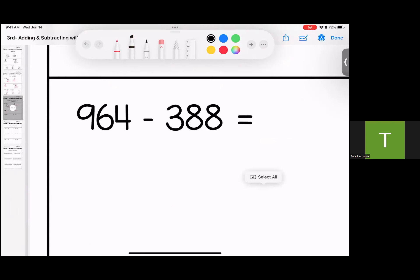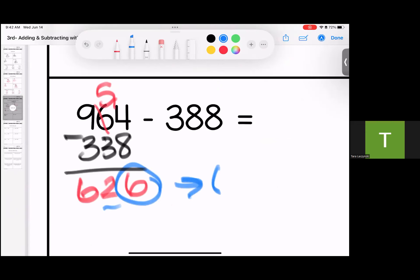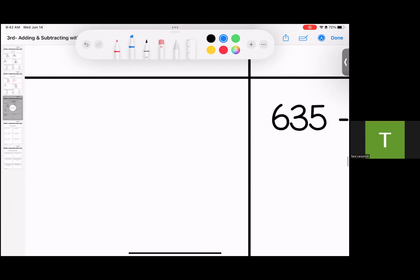Down here, I'm going to stack it. That's my preference. And I'm going to have to borrow. So 14 minus 8 is 6, 5 minus 3 is 2, 9 minus 3 is 6. But rounded, 630.